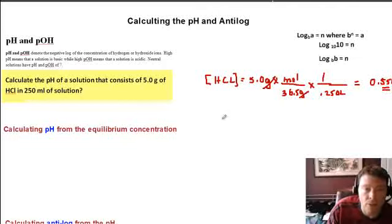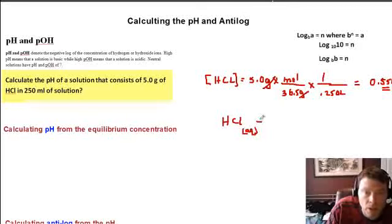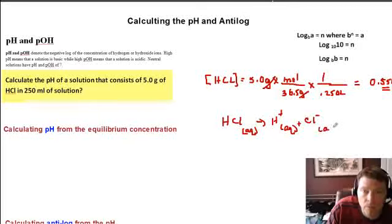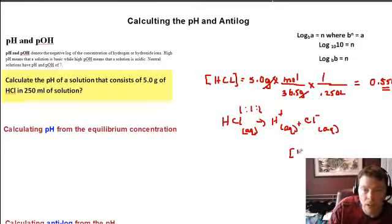Writing the dissociation equation: HCl (aqueous) dissociates completely to produce hydrogen ions plus chloride ions. This is a one-to-one-to-one relationship, meaning the concentration of hydrogen ions equals the concentration of HCl. Therefore, the concentration of hydrogen or hydronium ions is also 0.55 molar.